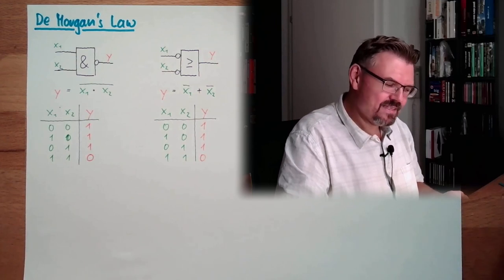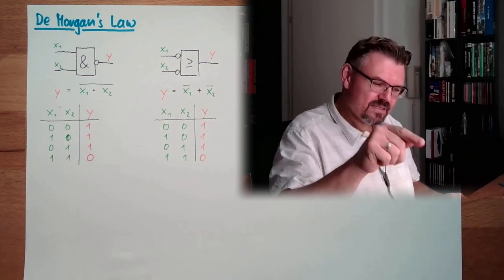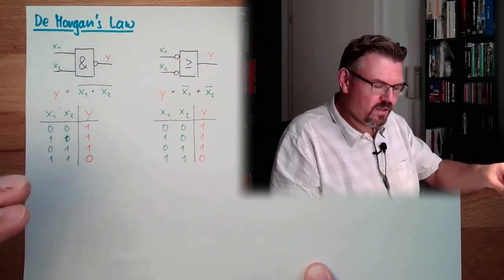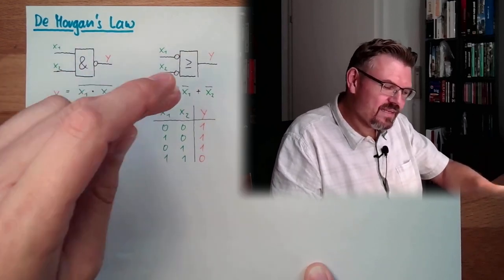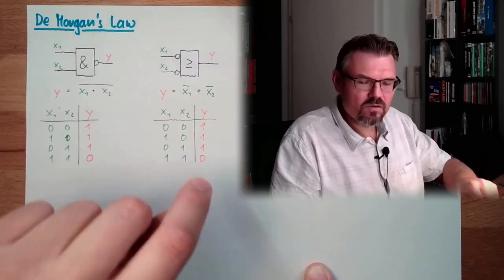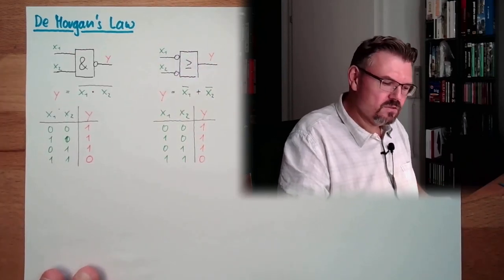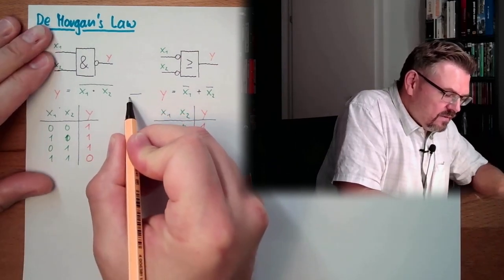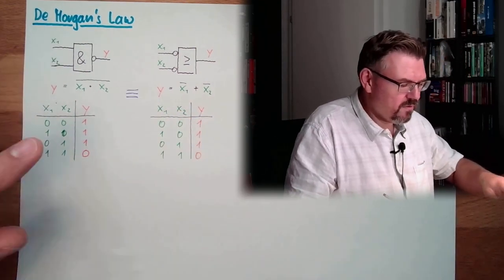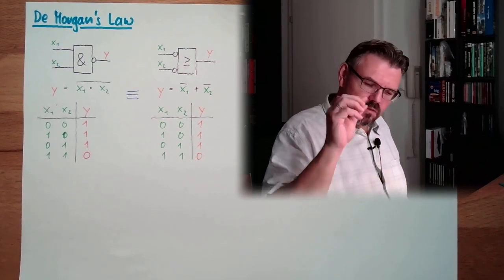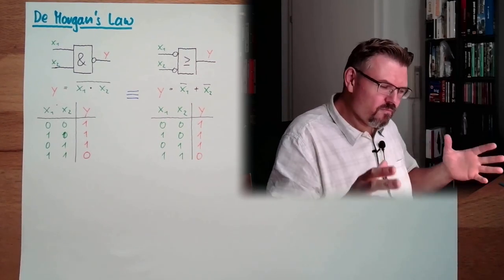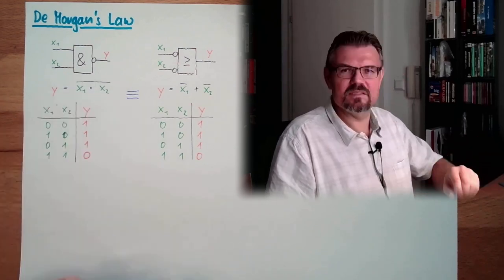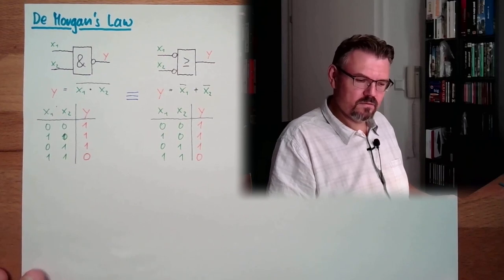It's exactly the same. So an AND with a NOT at the output is exactly the same like an OR and a NOT at the input. These two things are exactly the same. In all beauty. In every aspect they are the same. This is the rule of De Morgan.